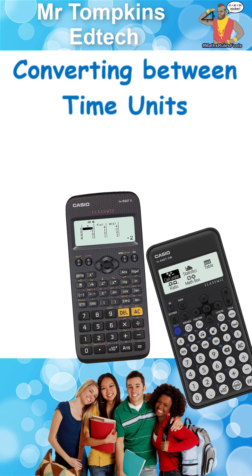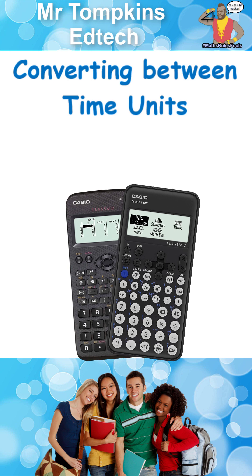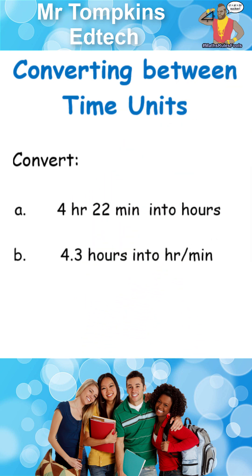Convert between time units on the old and new style Casio calculator. Firstly, convert 4 hours and 22 minutes into hours.